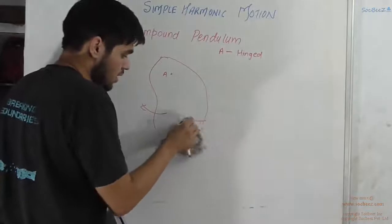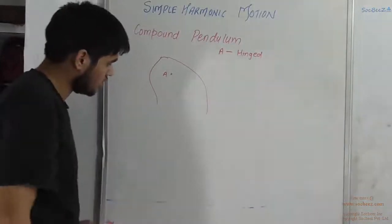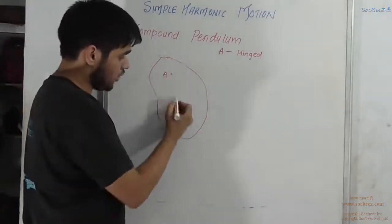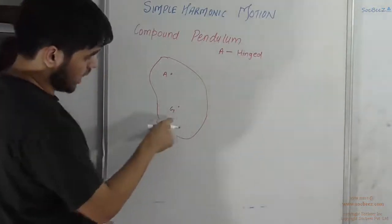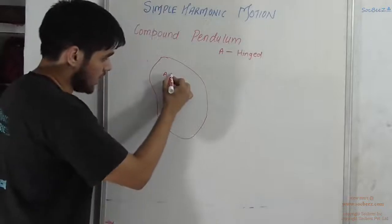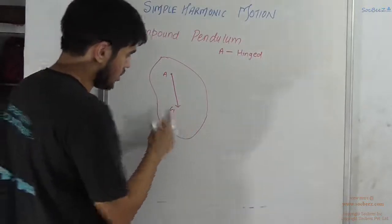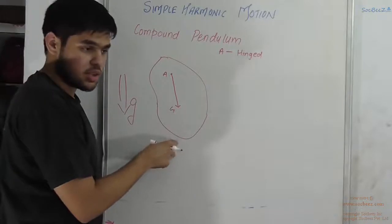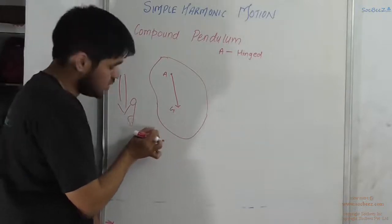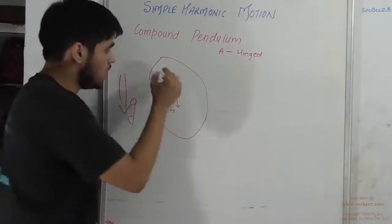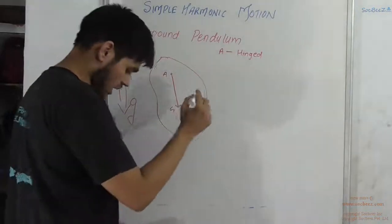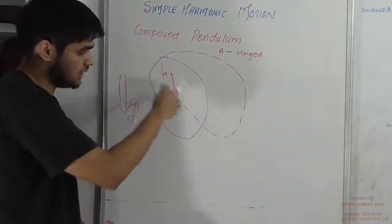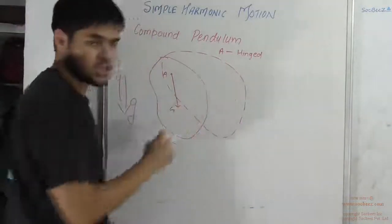What happens in a compound pendulum is: I hinge it about point A, and suppose the center of gravity of this body is G. I join points A and G — that is the initial vertical position. Suppose after pushing this compound pendulum, it moves to a new position — the dotted one is the new position.